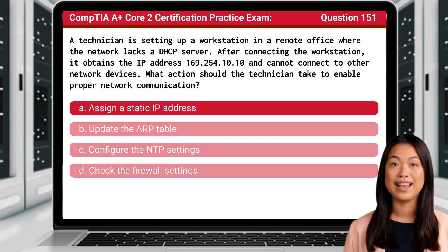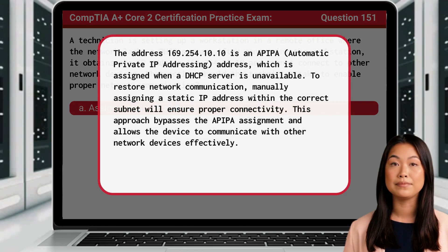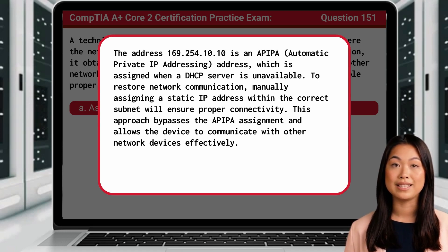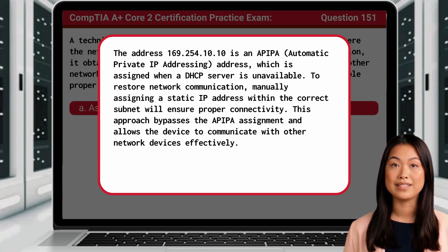The answer is A: Assign a static IP address. The address 169.254.10.10 is an APIPA address, which is assigned when a DHCP server is unavailable. To restore network communication, manually assigning a static IP address within the correct subnet will ensure proper connectivity. This approach bypasses the APIPA assignment and allows the device to communicate with other network devices effectively.